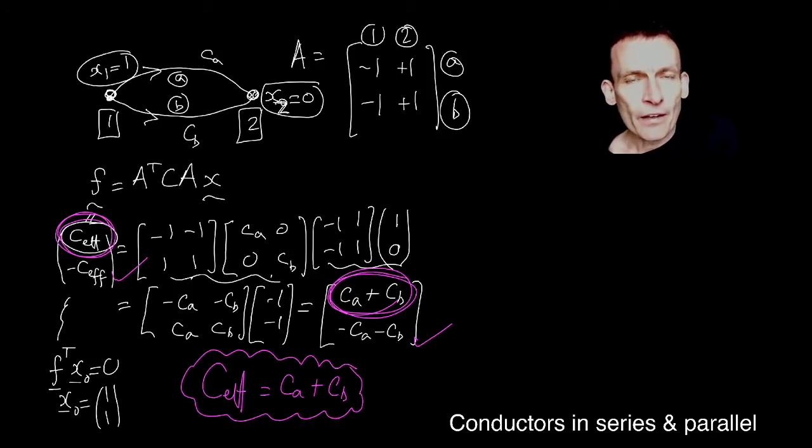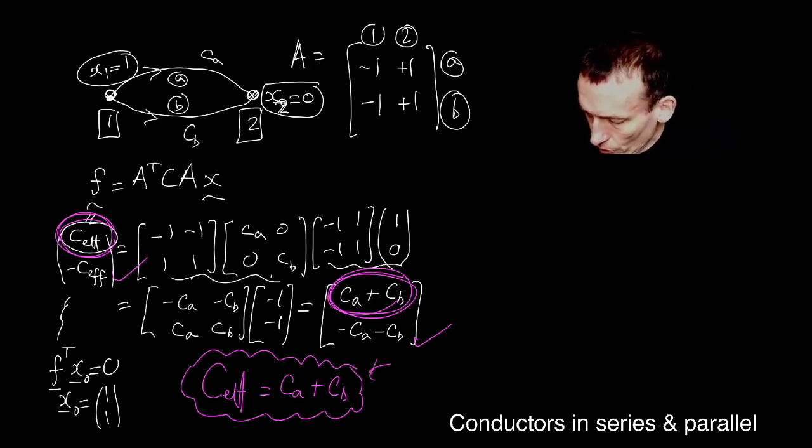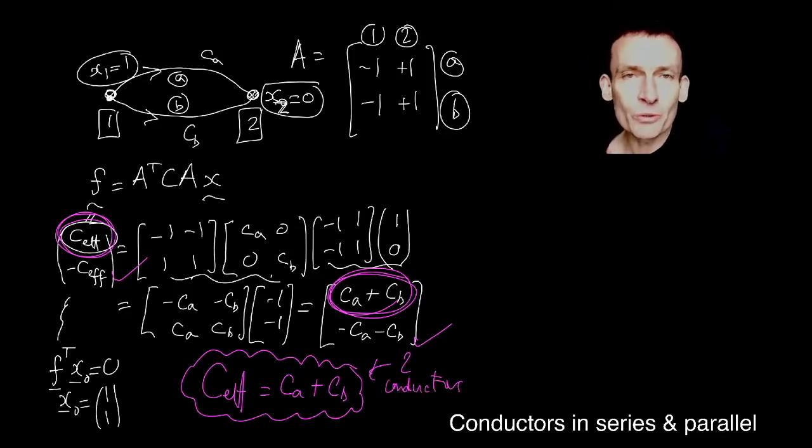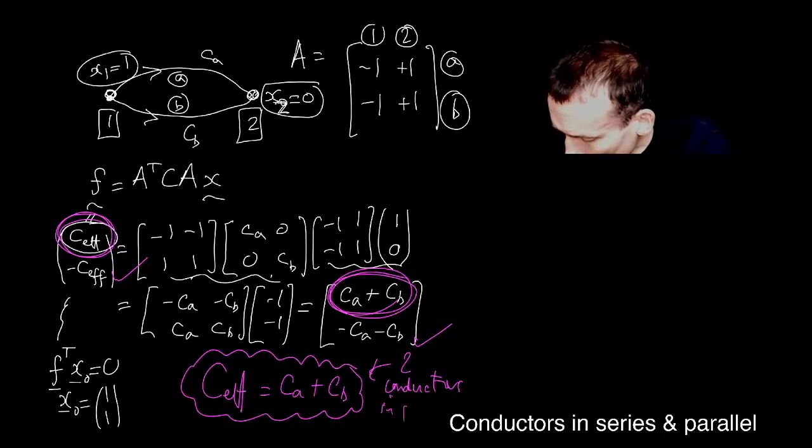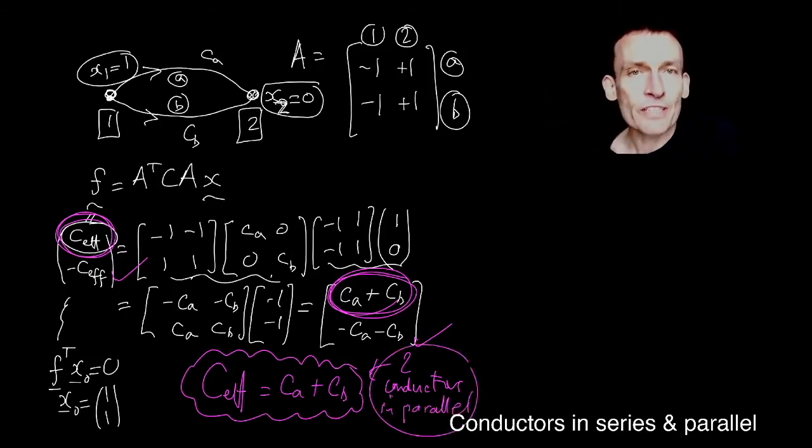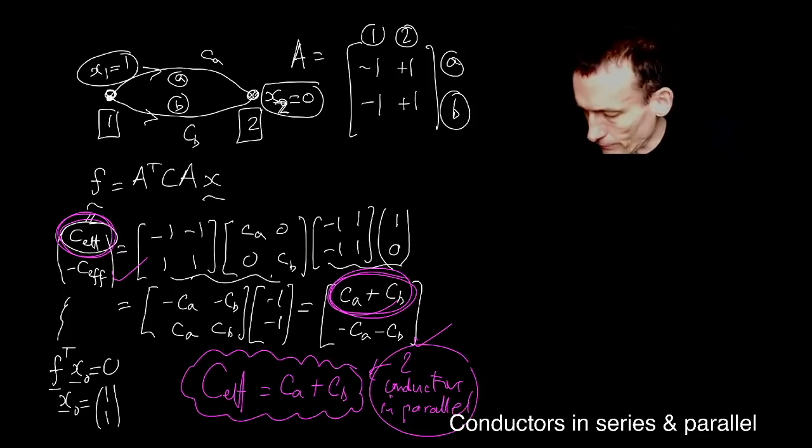It says that the effective conductance of two conductors in parallel. When I say in parallel, I simply mean that they're two edges connecting the same nodes. So two conductors in parallel, you just add up the conductances of each of the edges to get the effective conductance.